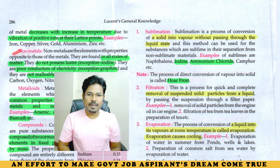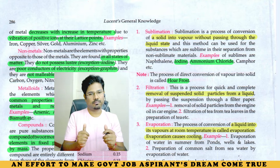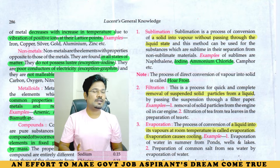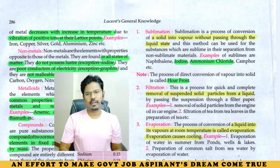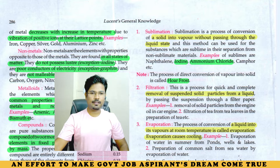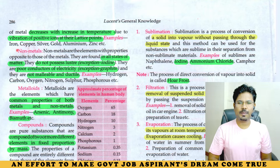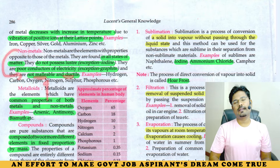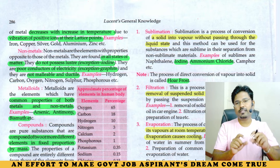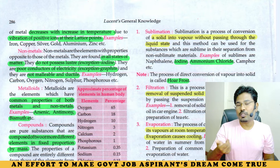Non-metals form covalent bonds and ionic bonds. Non-metals are non-malleable and non-ductile — this is important. Metals are malleable, but non-metals are not malleable. Non-metals are not malleable and not ductile.